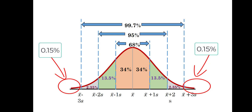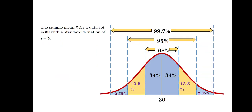Now let's use the empirical rule to answer this question. The sample mean x-bar for a data set is 30 with a standard deviation s equals 5. At the center we have 30. Going one standard deviation to the right we have 35, then 40, then 45. To the left we have 25, then 20, then 15.